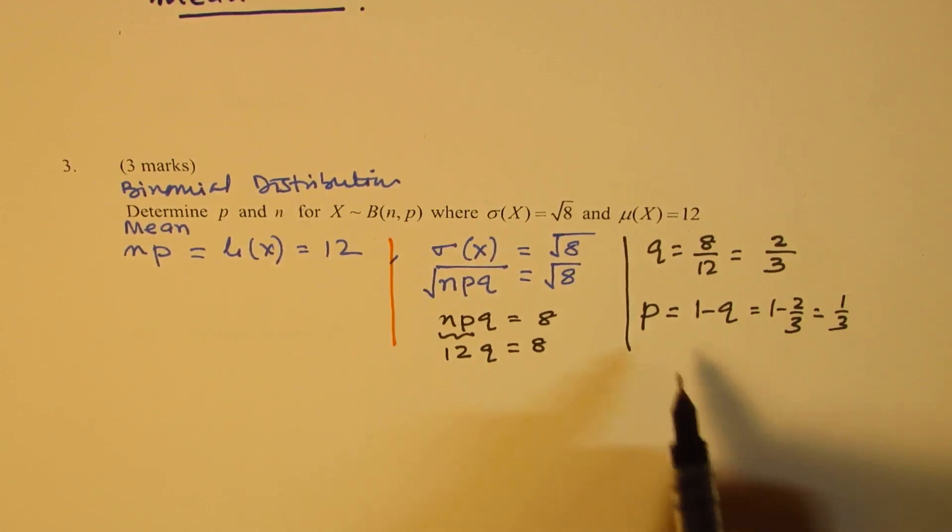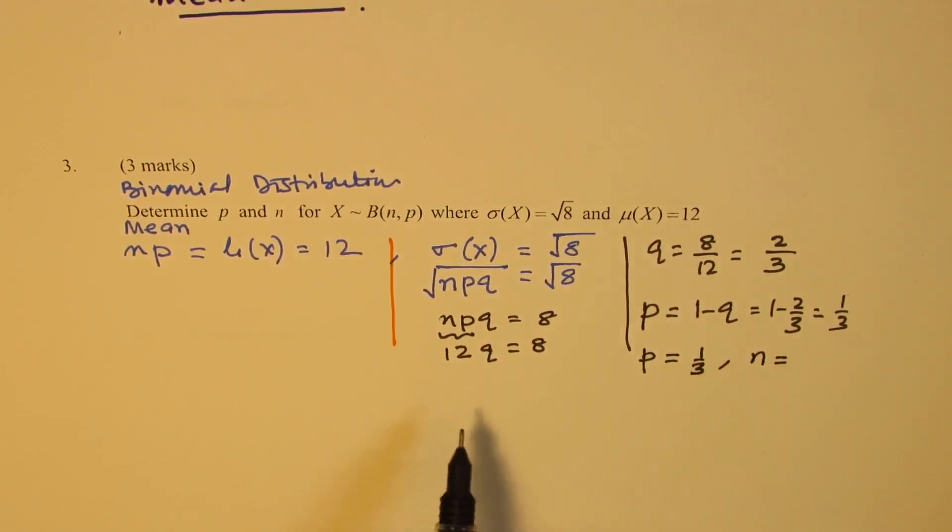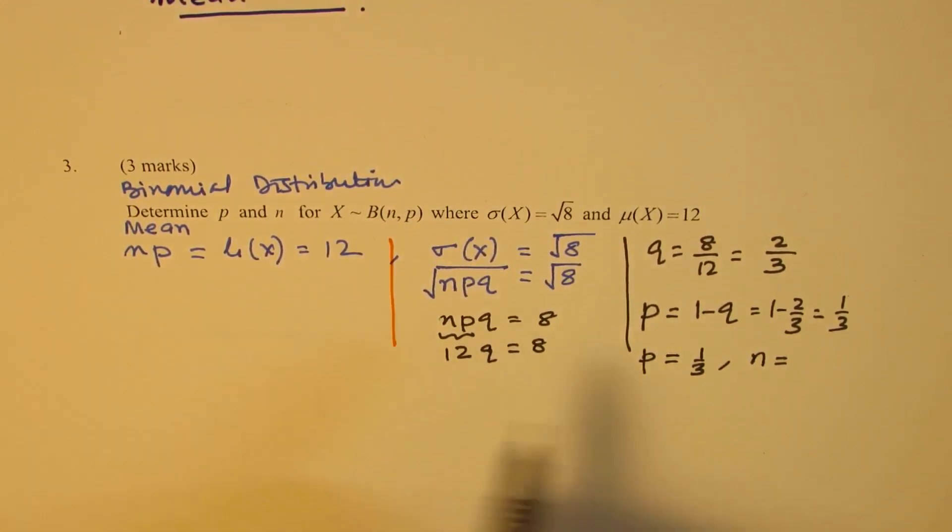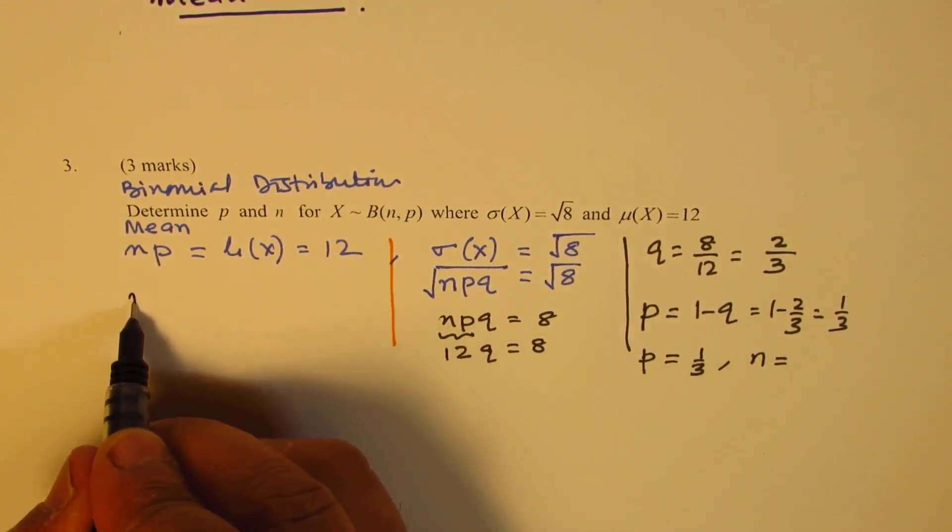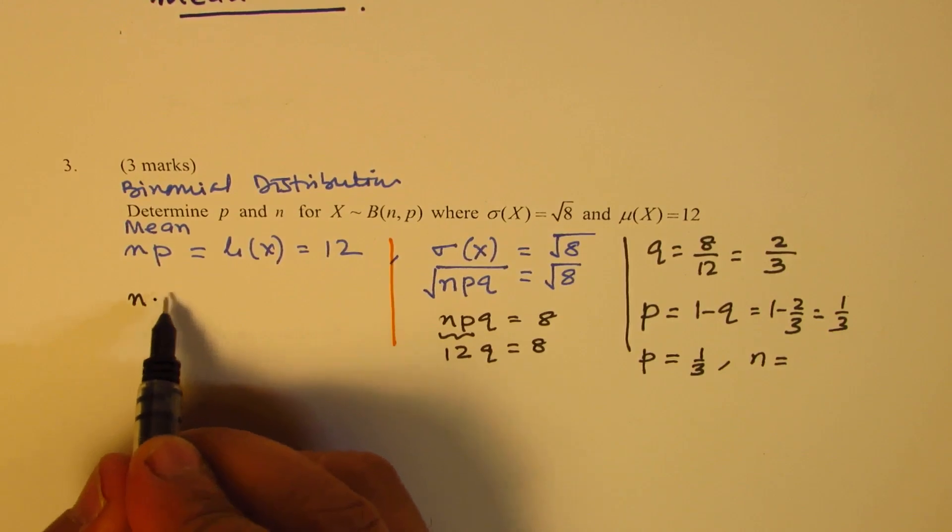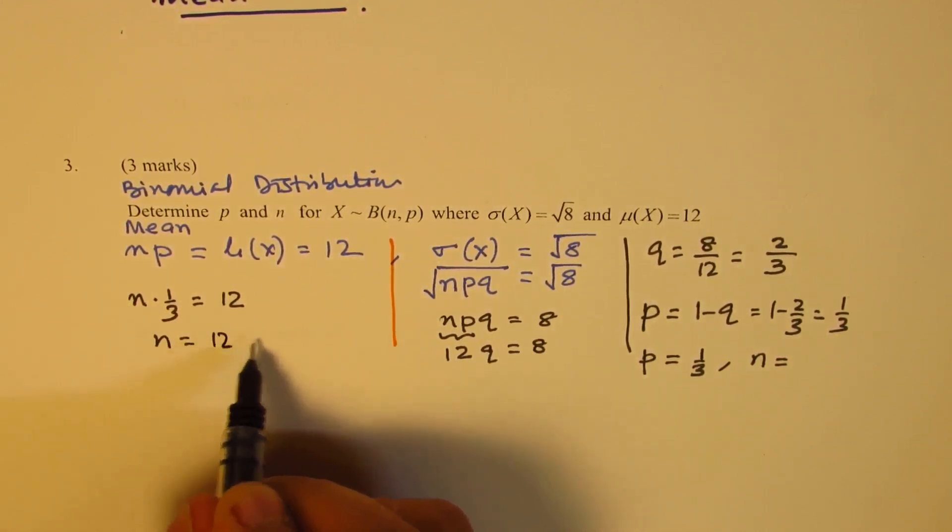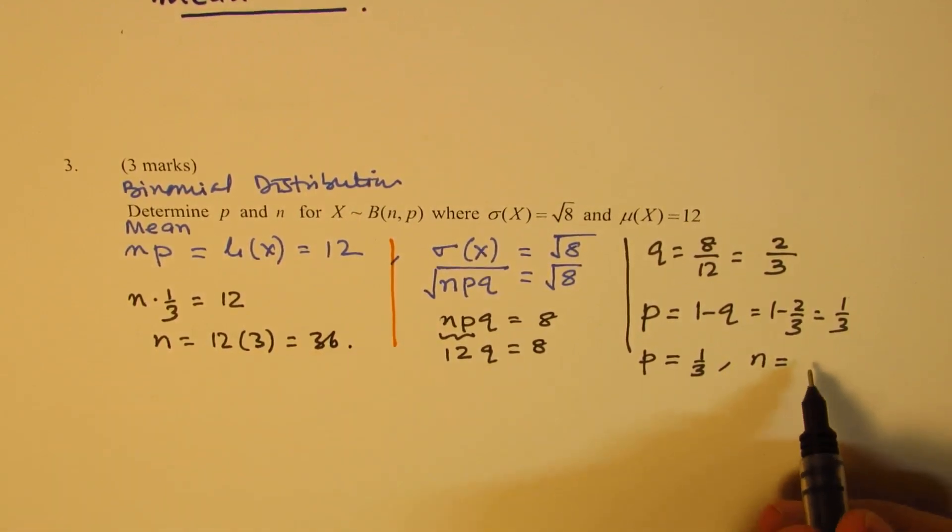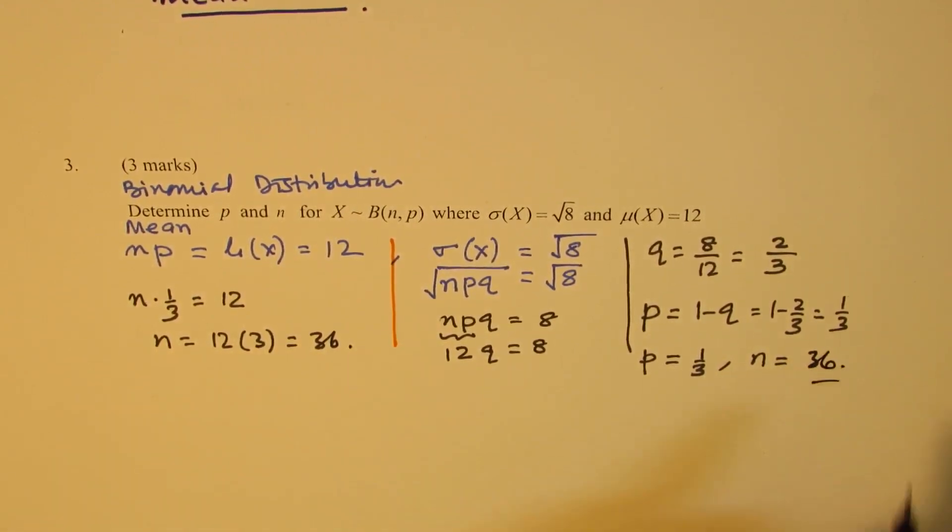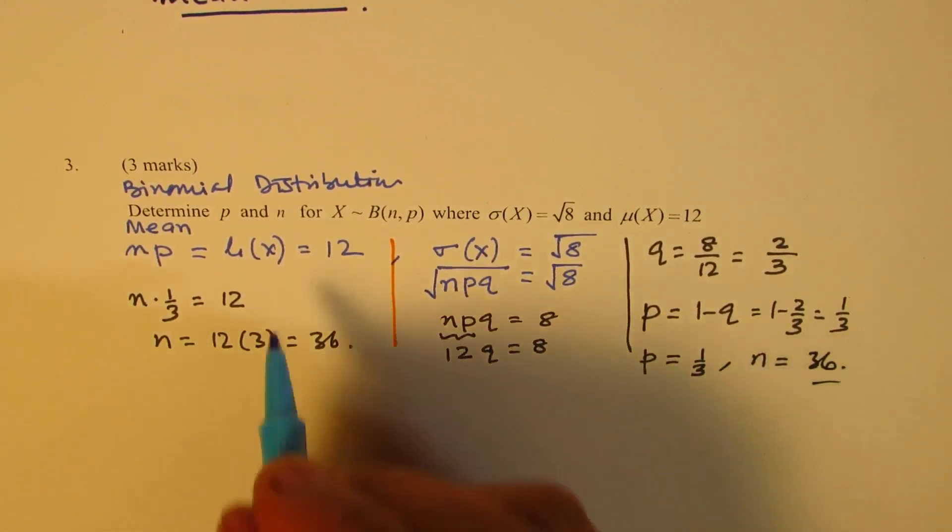We get P is equal to 1 over 3, and N... we didn't find N yet. So we'll get back to our first equation, which is N times P, which is 1 over 3, equals 12. So N is equal to 12 times 3, or 36. So we get N equals 36.